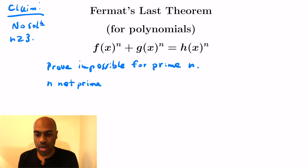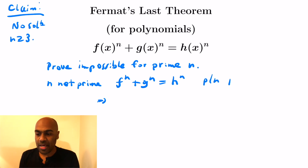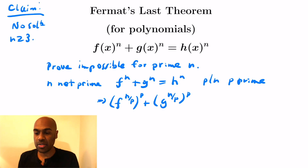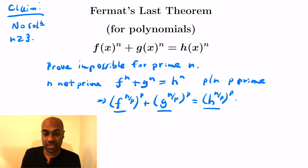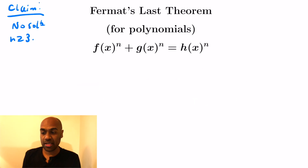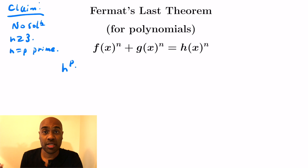Why does proving it for primes suffice? Say we had a positive integer n that's not prime and, for contradiction, had a solution with polynomials f, g, h satisfying f^n + g^n = h^n. Pick any prime p dividing n. Then (f^(n/p))^p + (g^(n/p))^p = (h^(n/p))^p, giving a solution for the exponent p. So impossibility for primes implies impossibility for all positive integers n, by reducing general n to one of its prime divisors.